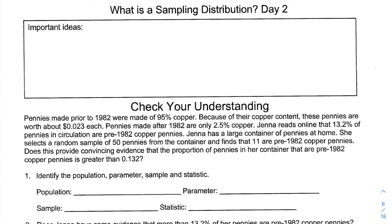Welcome back. Today we're going to talk about the second part of what a sampling distribution is. We're going to start by talking about what our goal is with doing a sampling distribution. A sampling distribution is going to allow us to evaluate claims that have to do with percentages. We're going to pull a sample of our own and ask the question: if this claim was true, how unlikely or likely is the result that I got?